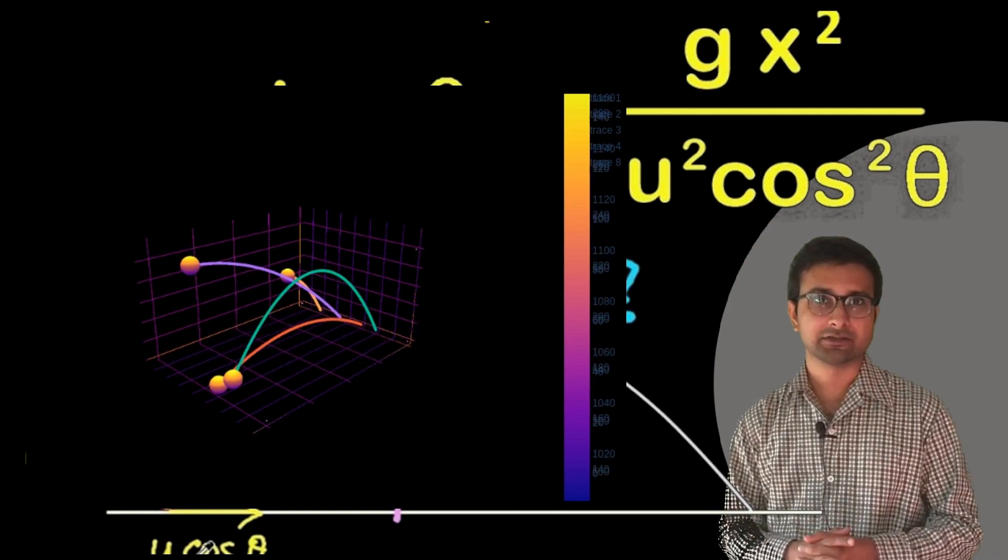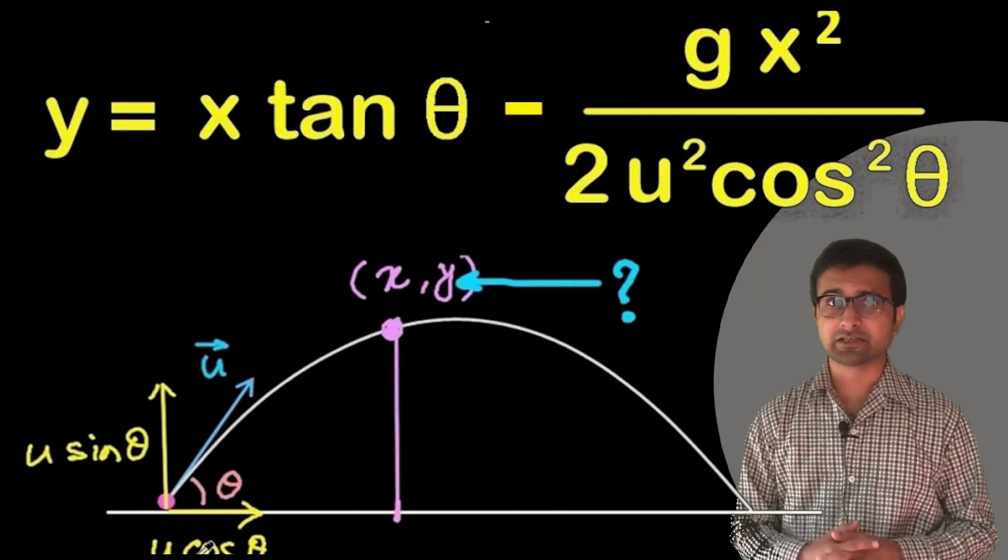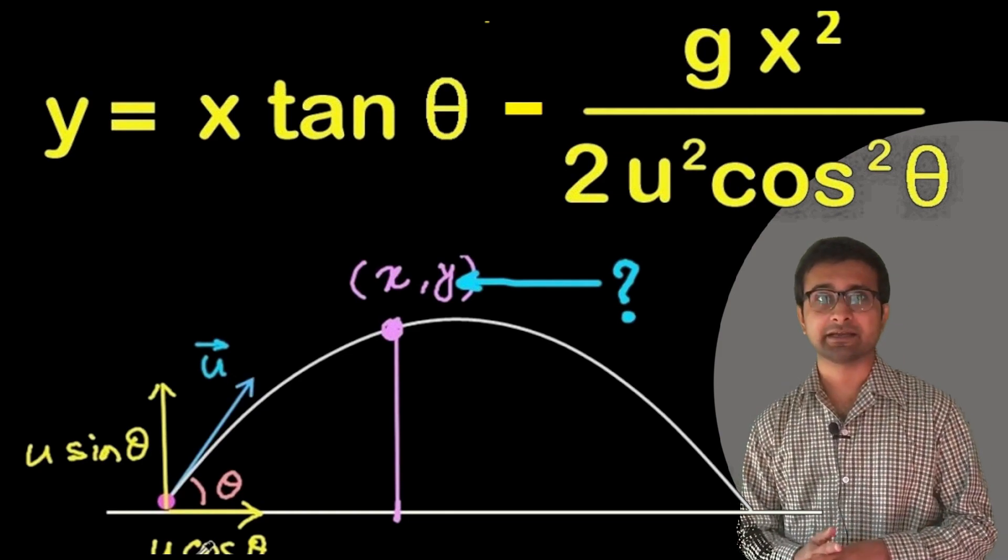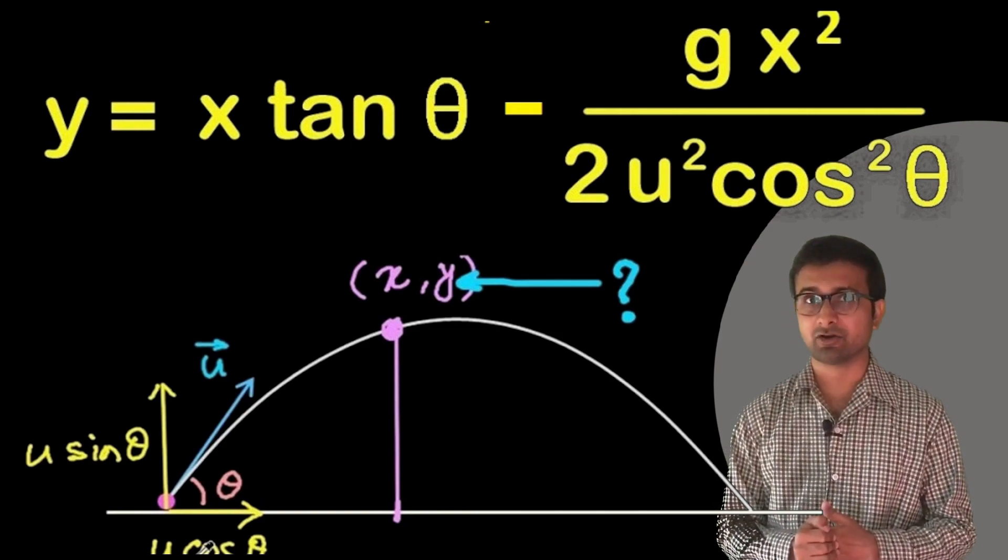If you see the equation, it is made out of sine, cosine, and squares. All these three functions are quite complex.